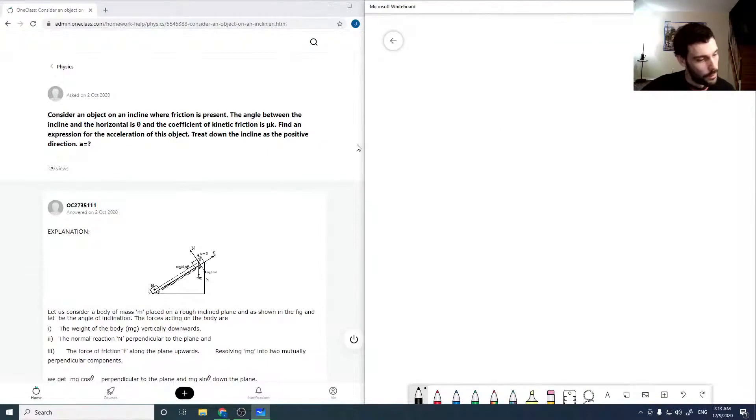Okay, so here we're going to consider an object on an incline where friction is present. We've got an incline, the angle is theta, there's our object, and it has a coefficient of kinetic friction. Remember, our frictional force is that coefficient times the normal, where our normal always acts perpendicular to the surface.